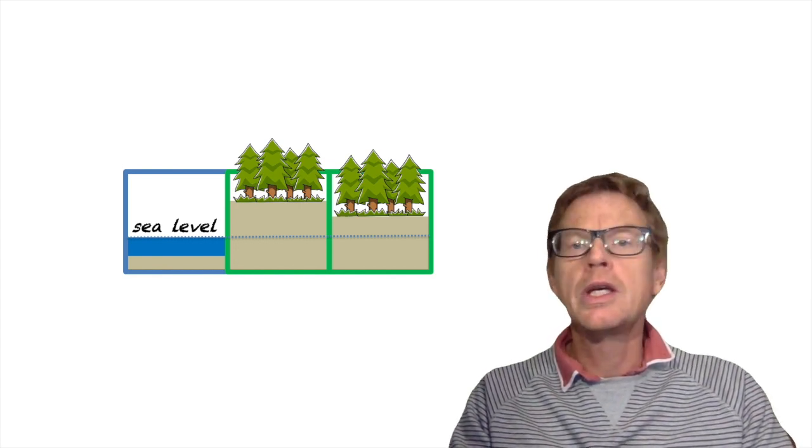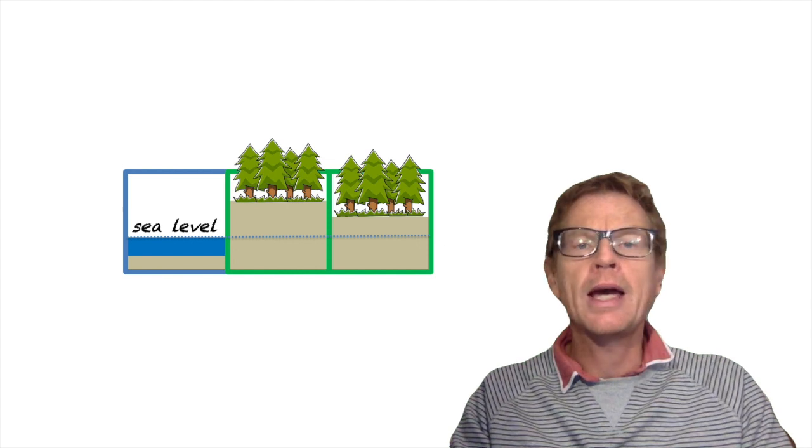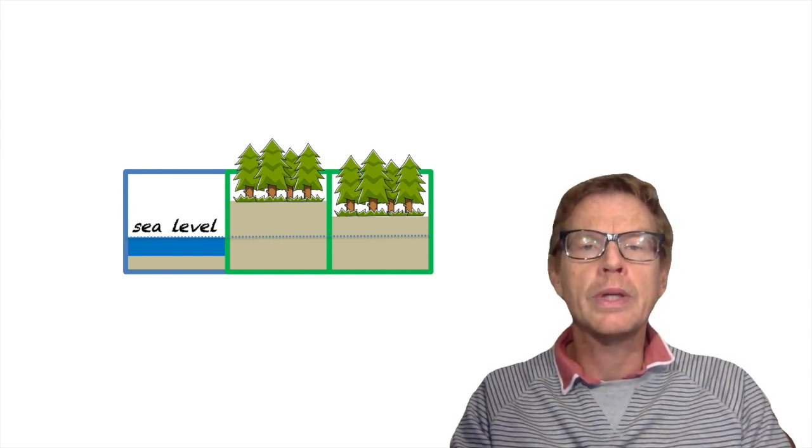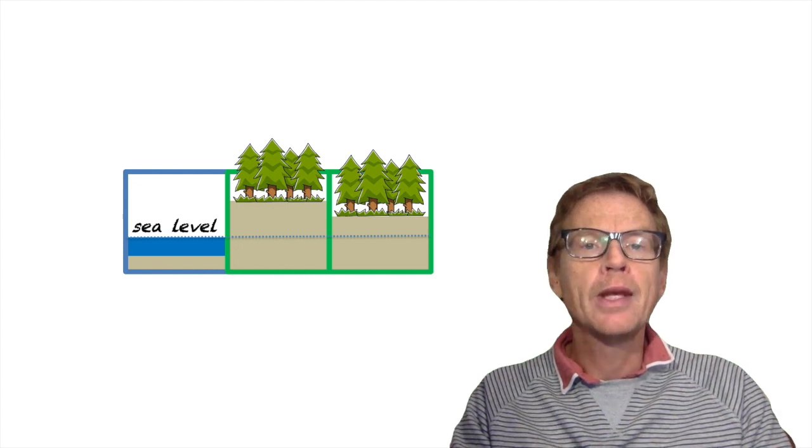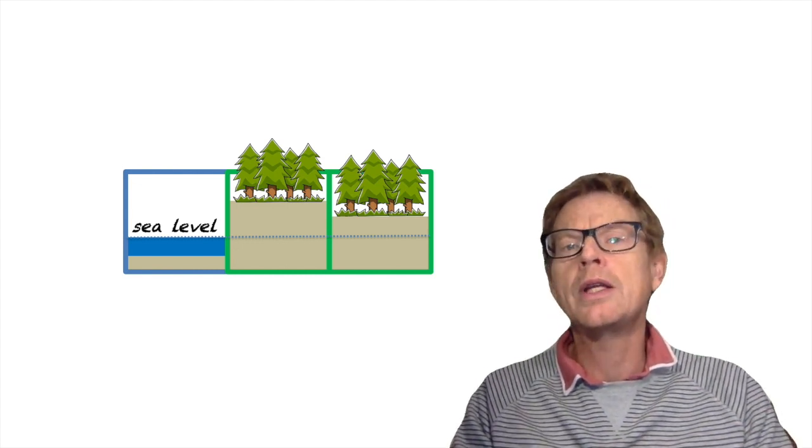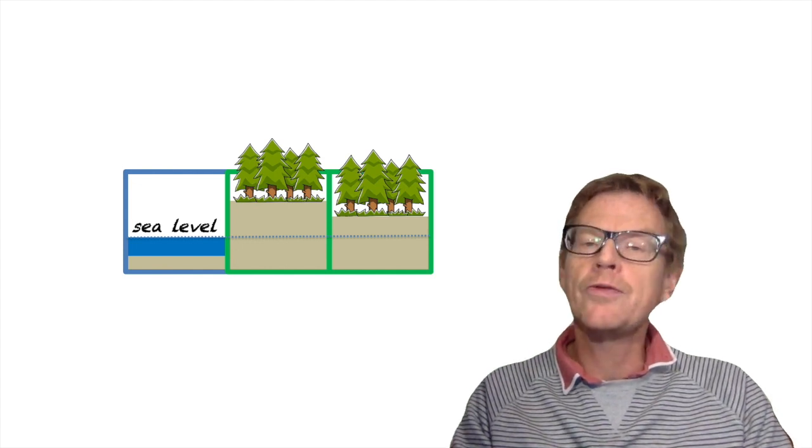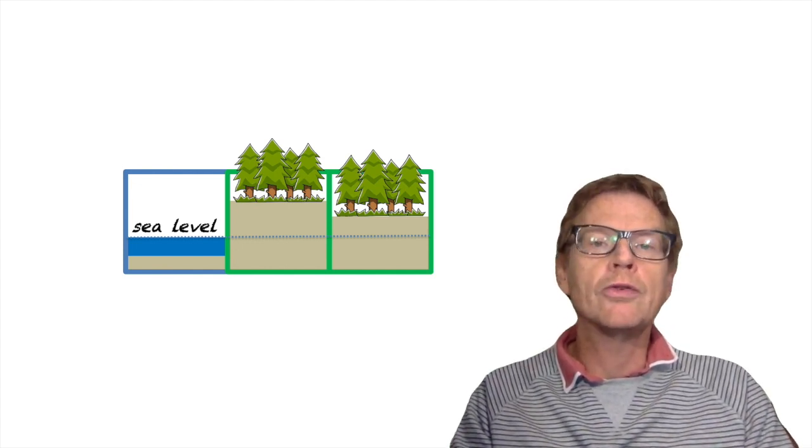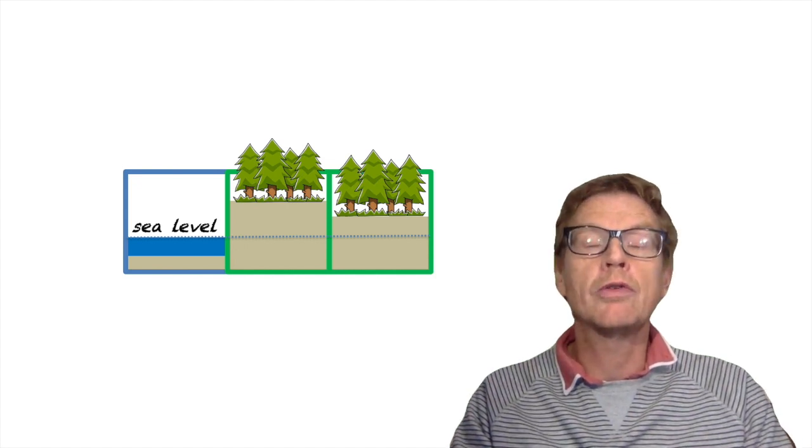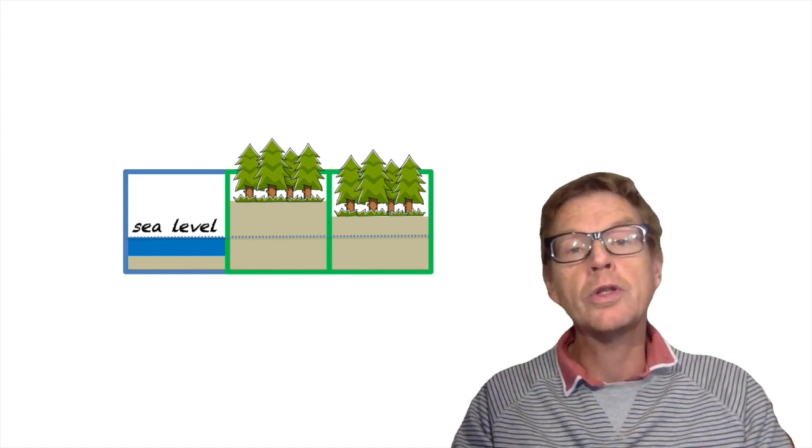So the first box is a sea point. And in that box, the topography is actually below sea level, showing the sea floor. In the second and third boxes, we're instead showing land where the topography is actually above sea level. So if we have a topographical file that shows the height, we can use this to decide whether a grid box is a land point or an ocean point.